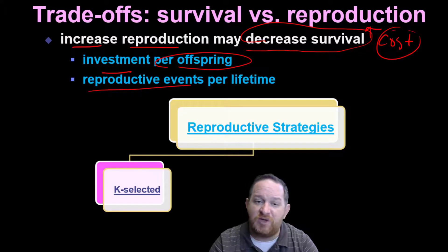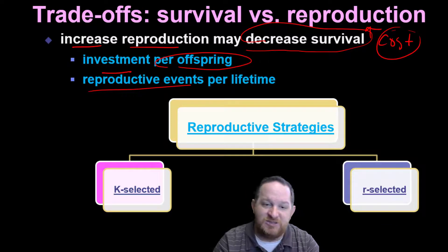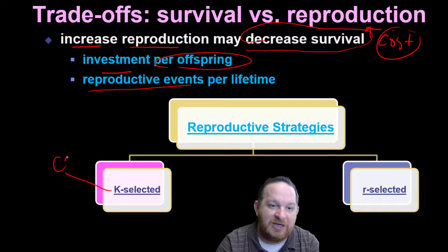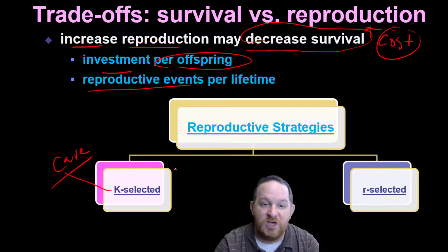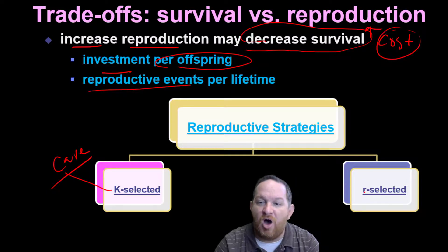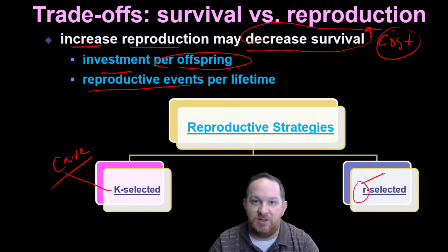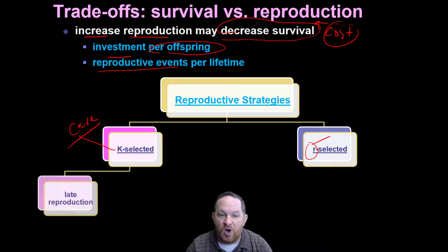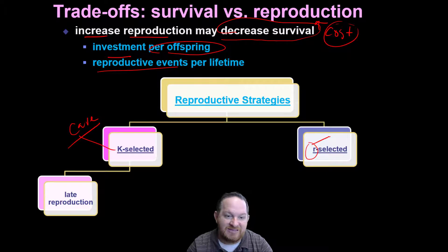So nature has shown us that there are actually a few different strategies that organisms take — we call these the reproductive strategies. Two types are K-selected and R-selected. My way to remember this: when I think K, I think care — K-care. These organisms put a lot of care into their offspring. R — their strategy is reproduce, reproduce: lots and lots and lots of babies.